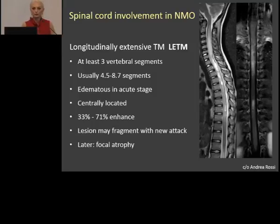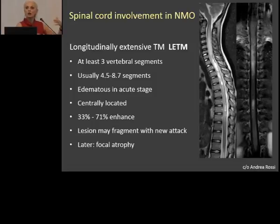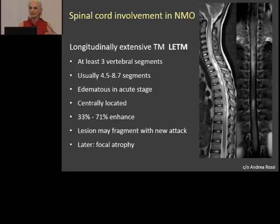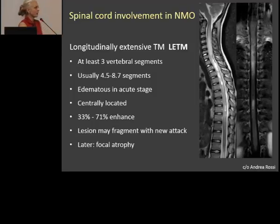How is the spinal cord involved? In a long fashion — it's called longitudinally extensive transverse myelitis. It has to span at least three vertebral segments, although it's usually even longer. It is centrally located, with high signal intensities suggesting cyst or necrosis inside. It will enhance in a patchy fashion. In the next attack, the lesion fragments — so in the first attack you have one long continuous myelitis, and in the second attack there are separate pieces with normal cord in between. Later you will see focal atrophy.